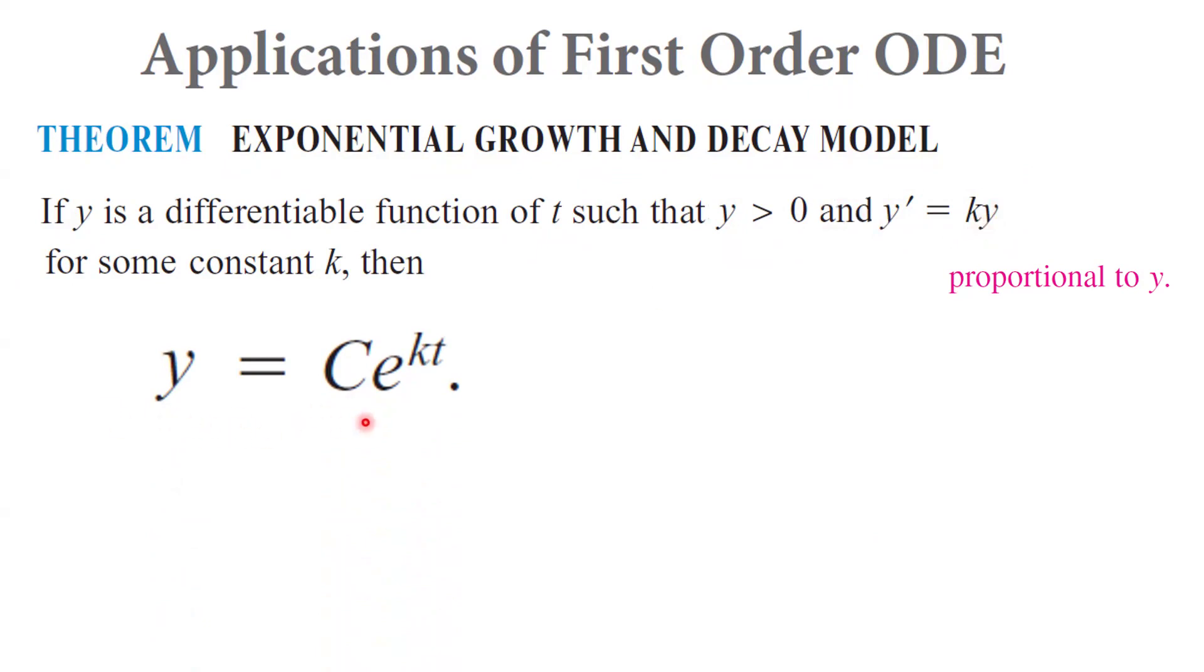But what are the steps here? Since dy dt equals ky, this is basically y prime equals ky. It is a separable differential equation. We can write dy over y equals k dt, which in turn can be taken the integral of both sides. The integral of dy over y is the integral of k dt.